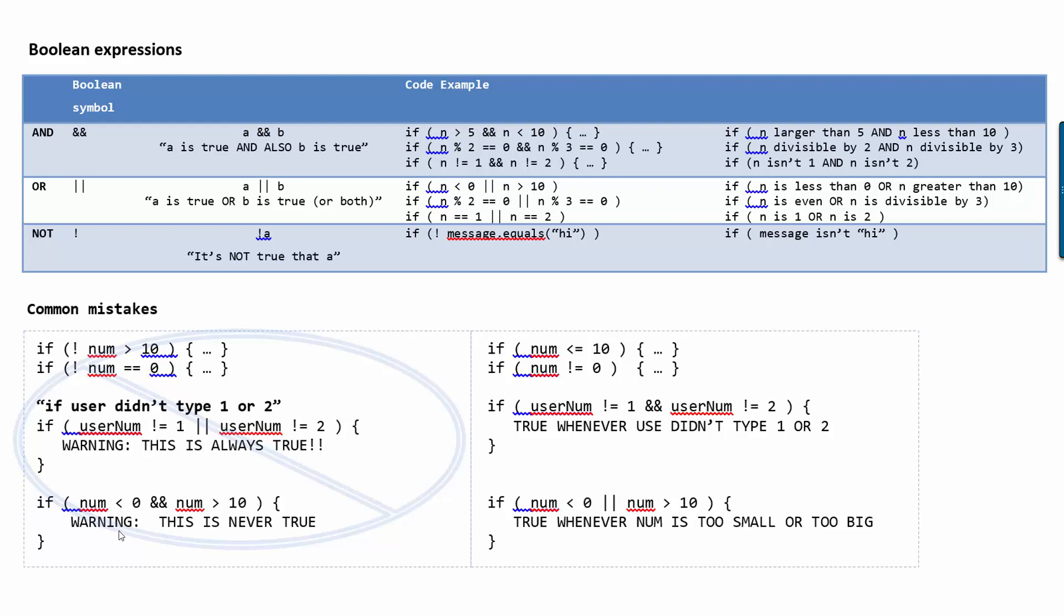I also sometimes see students doing this. They'd say, like, if number less than 10 and number bigger than, sorry, if number less than 0 and number bigger than 10. Well, this is never true because it's not possible for a number to be smaller than 0 and also bigger than 10 at the same time. So keep your head out for those.